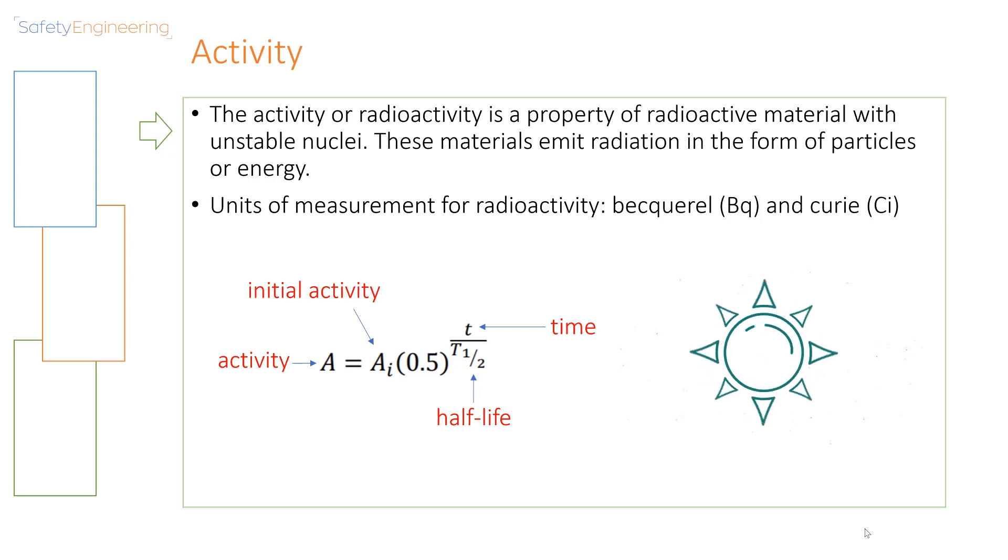Let us examine the first equation, the equation for radioactivity. The activity or radioactivity is a property of radioactive material with unstable nuclei. These materials emit radiation in the form of particles or energy. Types of radiation include alpha radiation, beta radiation, and gamma radiation. You also have radiation types such as Bremsstrahlung radiation. Now the units of measurement for radioactivity include the Becquerel and Curie. Now let us examine this equation. The A in equation is for activity, AI is the initial activity, T is the time, and T half is the half life.